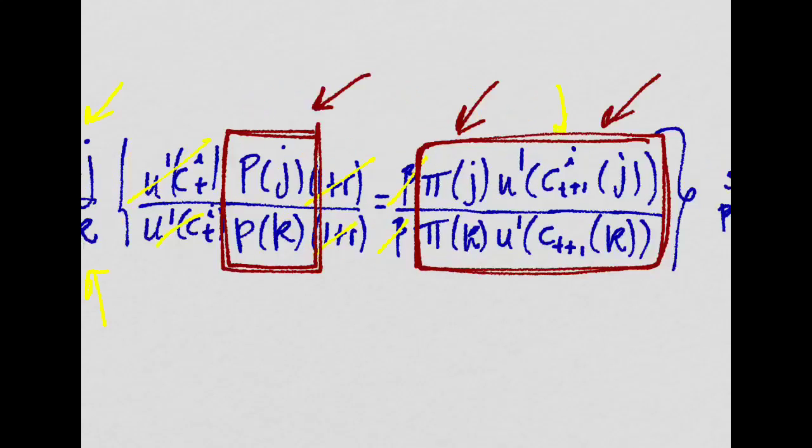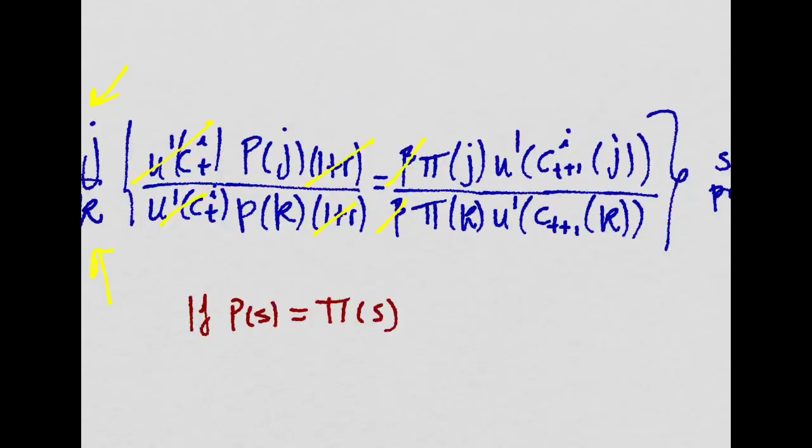And will be the same for any agent I. Now, imagine that we make the assumption that the price of an Arrow-DeBrew security for a state S is the same as the probability that this state S occurs.